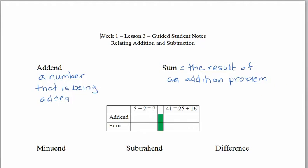Look at these two problems inside the box and identify any addends and any sums that you see. Pause while you do that and then come back. Addends are numbers that are being added, so we have two addends: 5 and 2, and the sum — that's the answer — would be 7. For the other problem, the addends are 25 and 16, and the sum is 41.